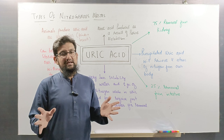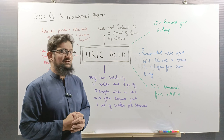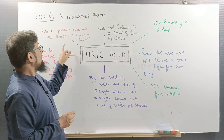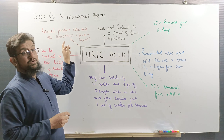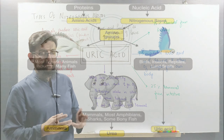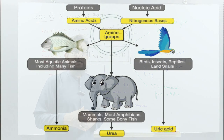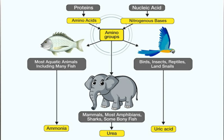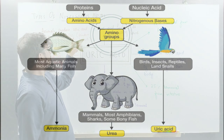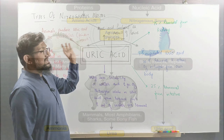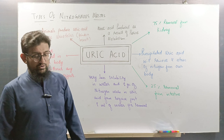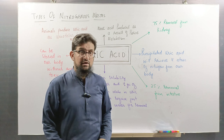Animals that produce uric acid during their metabolism are called uricotelics, and the majority of birds and insects are uricotelic animals.